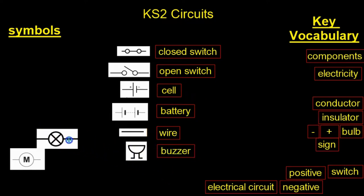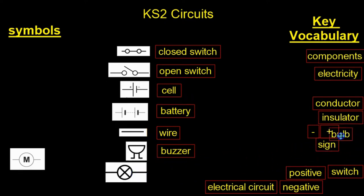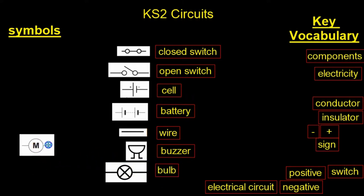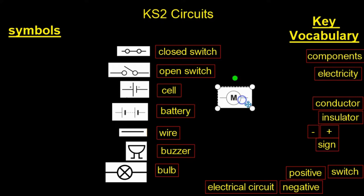This is the symbol for a lamp, or a bulb. And the last one, which I haven't left enough room for, but this one is a motor. So again, you have closed switch, open switch, cell, battery, wire, buzzer, bulb, and last but not least, motor.